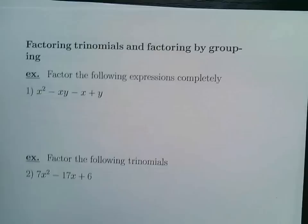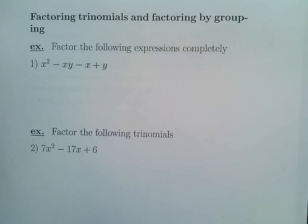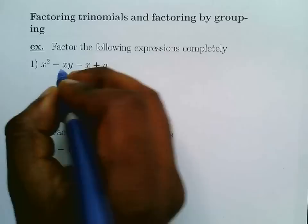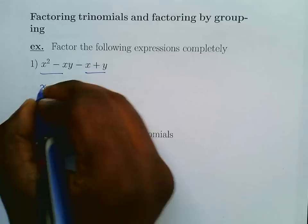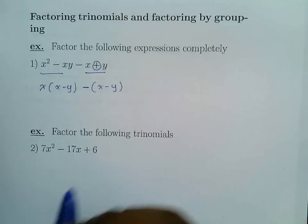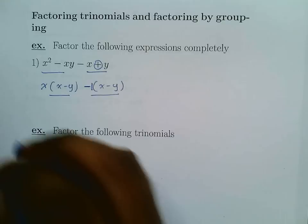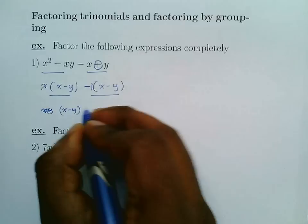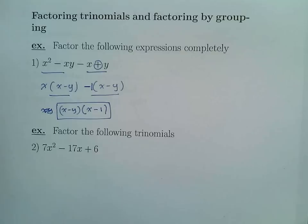These are the last examples: factoring by grouping and factoring trinomials. For factoring by grouping, group the terms and take common factors. Here x is a common factor in the first pair giving x(x - y), and -(x - y) from the second pair. Now (x - y) is a common factor, so the result is (x - y)(x - 1).